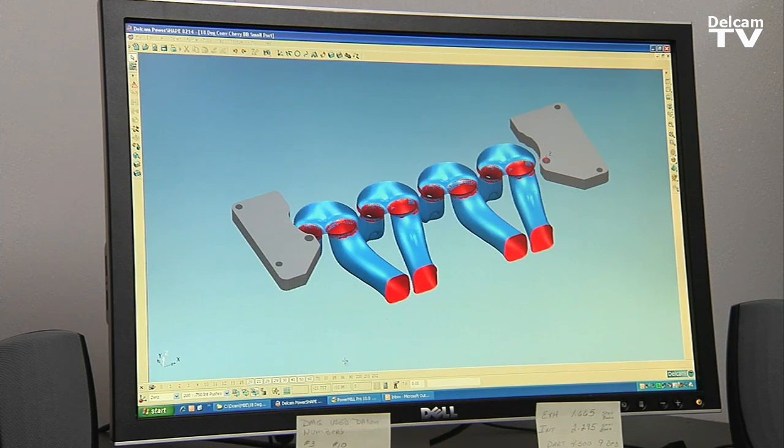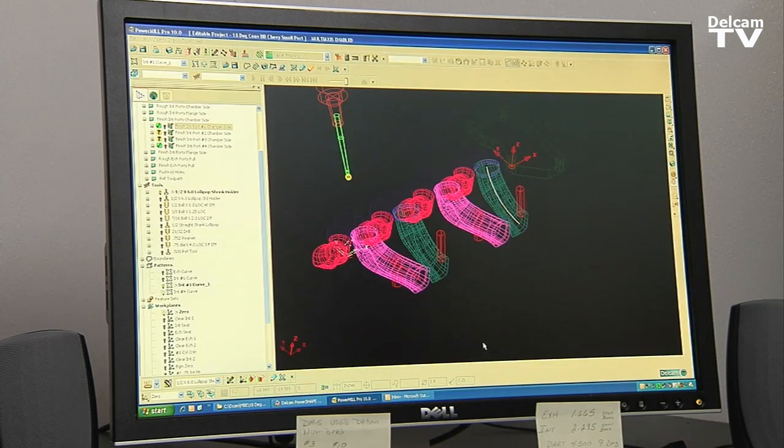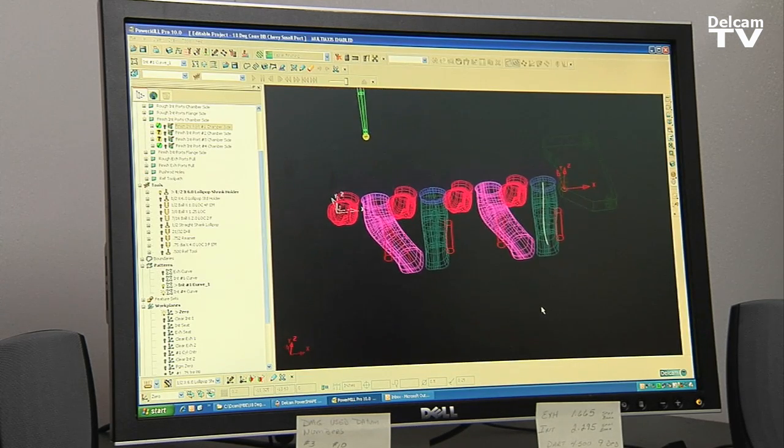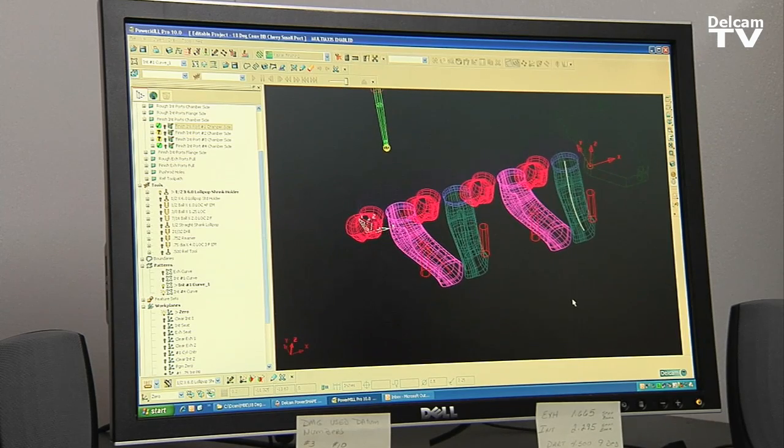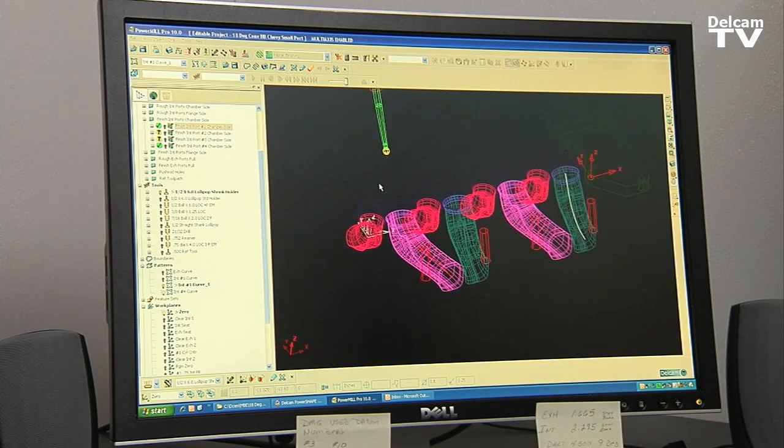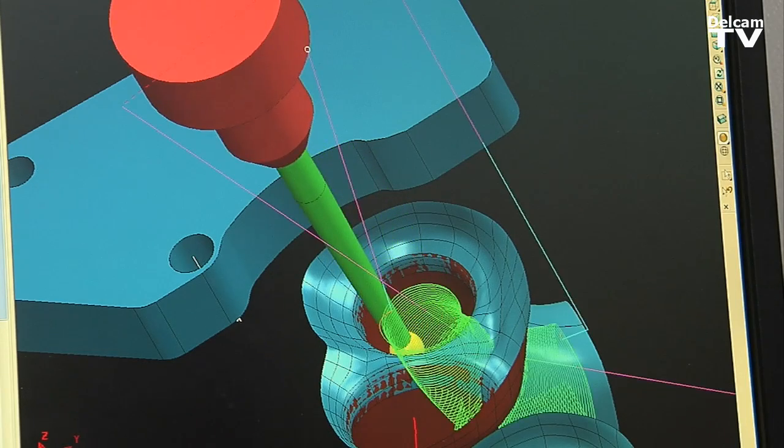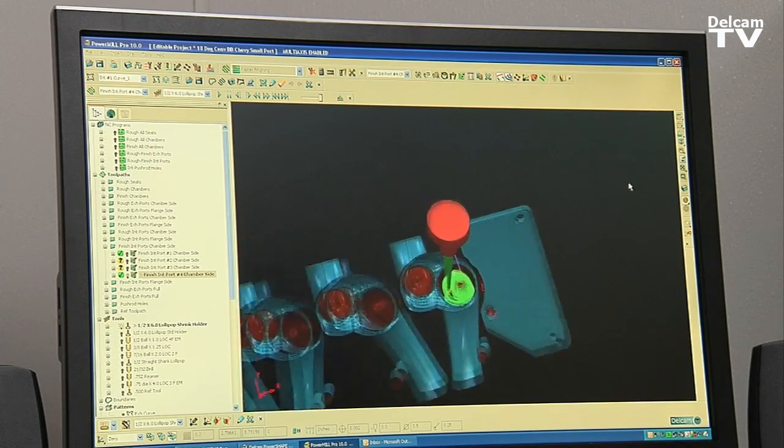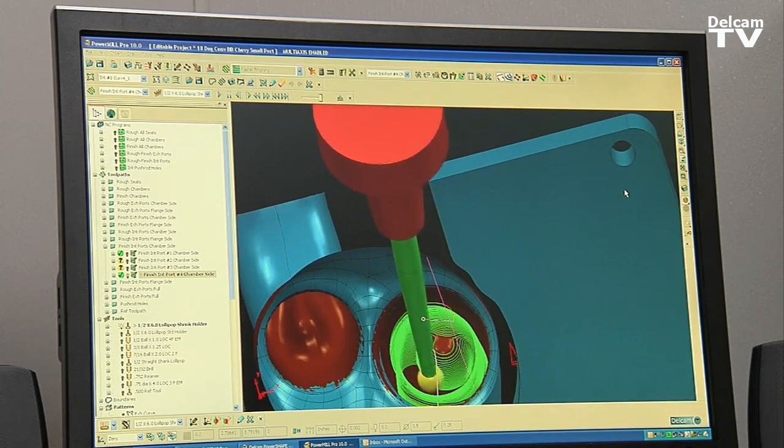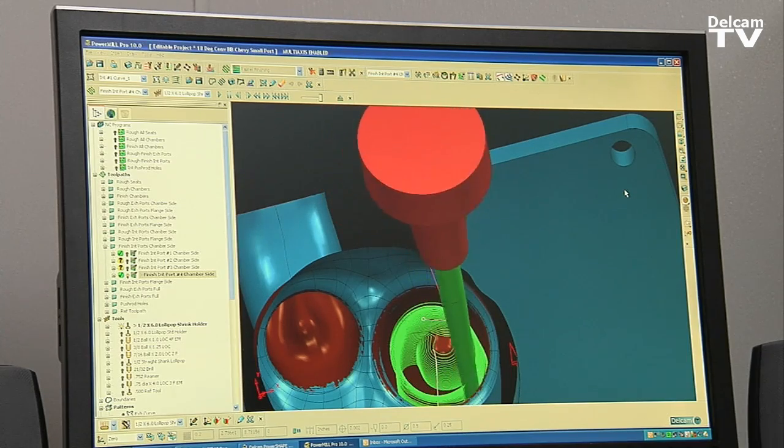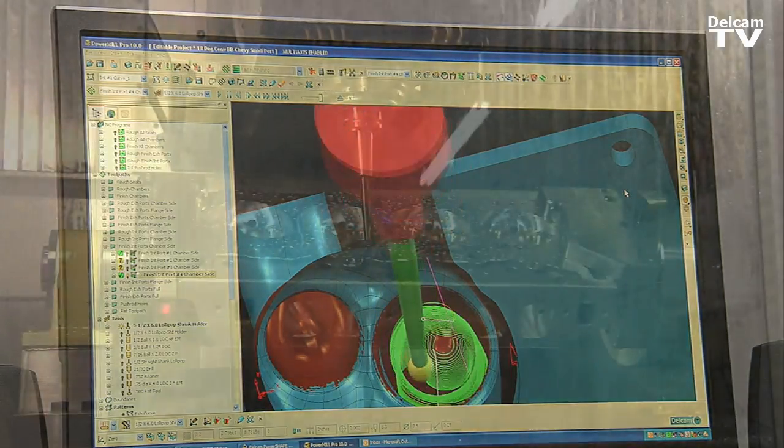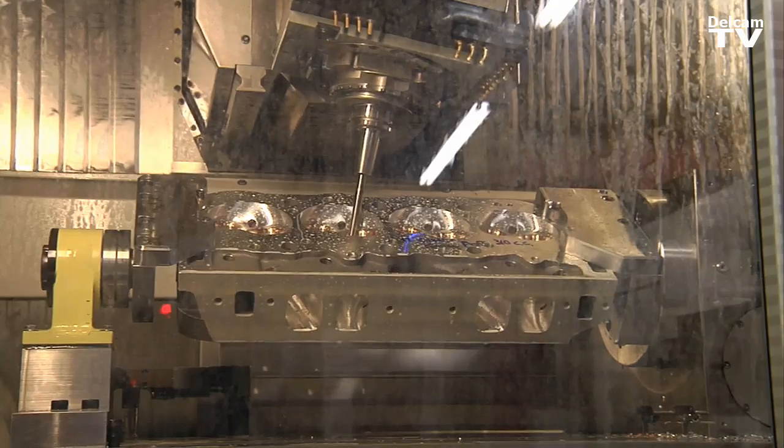Once we get all this arranged in the model, we move it over to PowerMill. The reason we chose Delcam's PowerMill is they have a very powerful automatic porting routine. You can see it's keeping the edge of the tool in contact with the port itself as opposed to the tip of the tool. Cutting on the side of the tool gives you a much better finish.